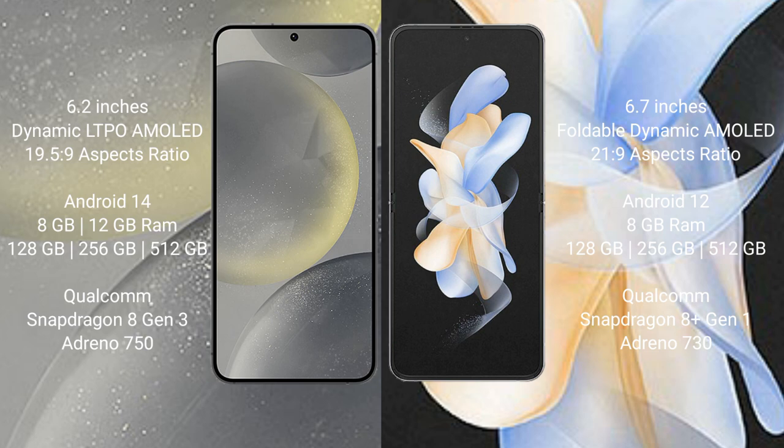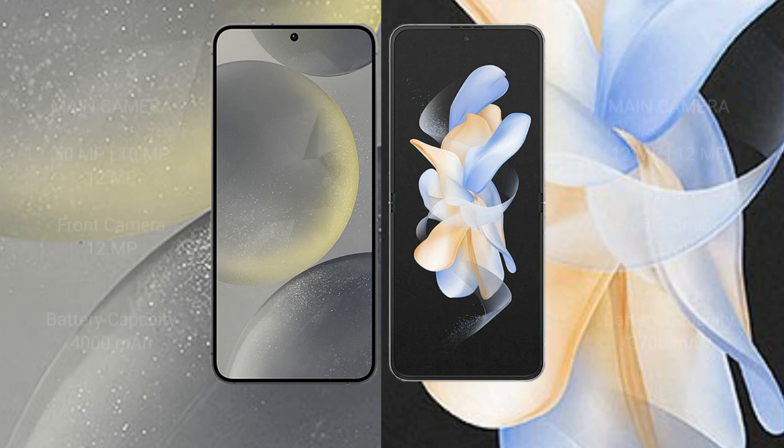The Samsung S24 is powered by the Qualcomm Snapdragon 8 Gen 3 processor with an Adreno 750 GPU. The Samsung Galaxy Z Flip 4 comes with 8GB RAM and 128GB, 256GB, or 512GB internal storage, powered by the Qualcomm Snapdragon 8 Gen 1 processor with an Adreno 730 GPU.